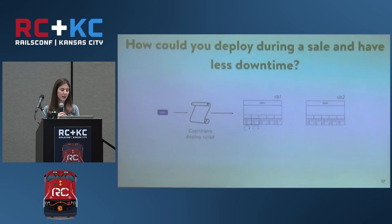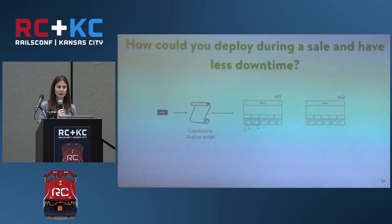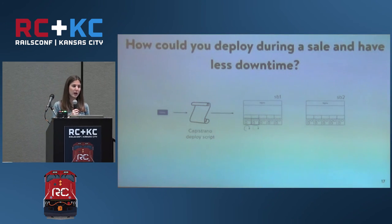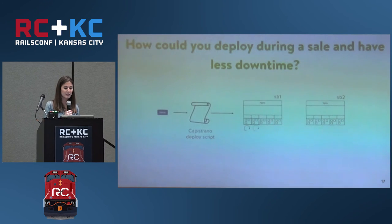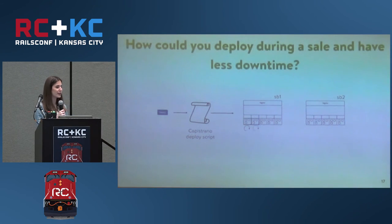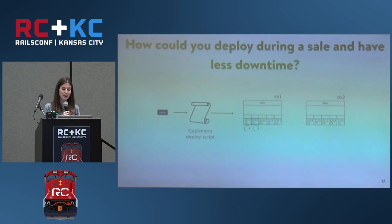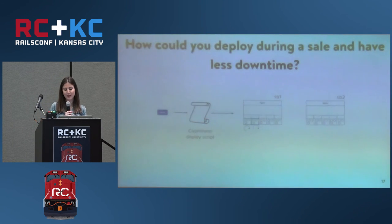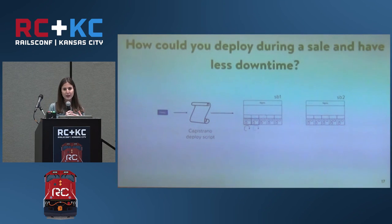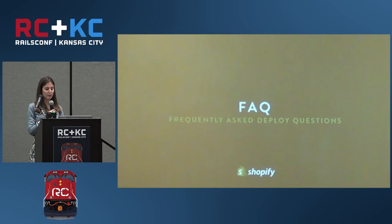What if you had to deploy during a sale but couldn't afford to lose 20% capacity? One thing you could do is only deploy on half of the servers. Say you only deploy to 100 of the 200 servers — you're down 20% but only on half, so you've only lost 10% total capacity. If you want even less downtime, you deploy on a quarter, and then you're only down 5%.